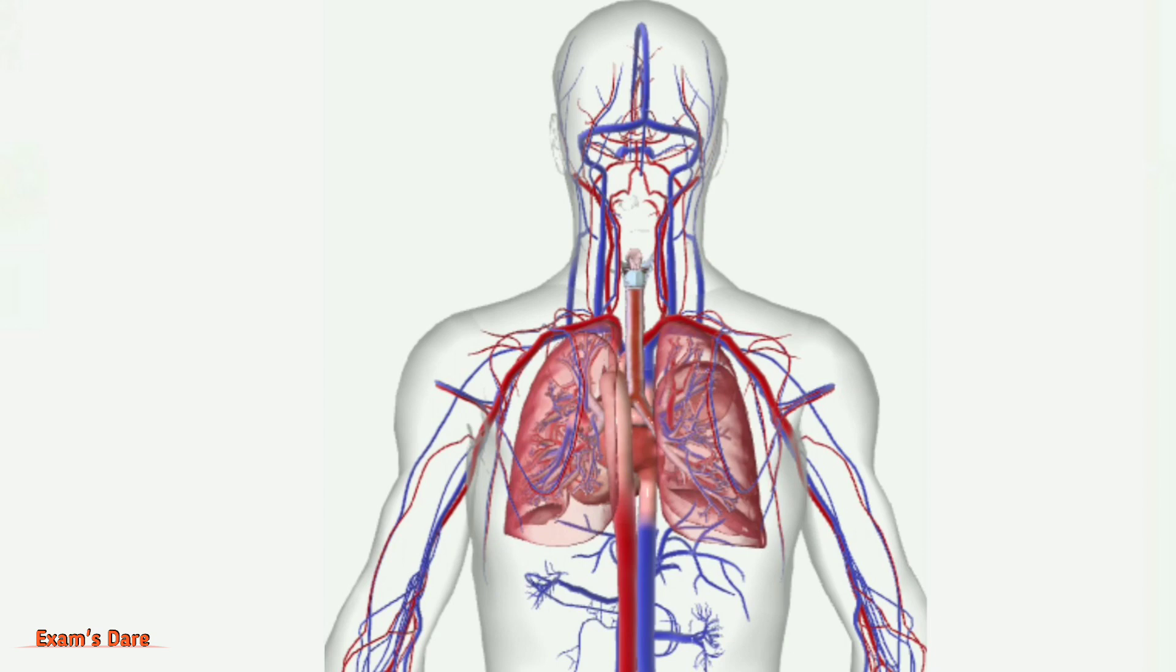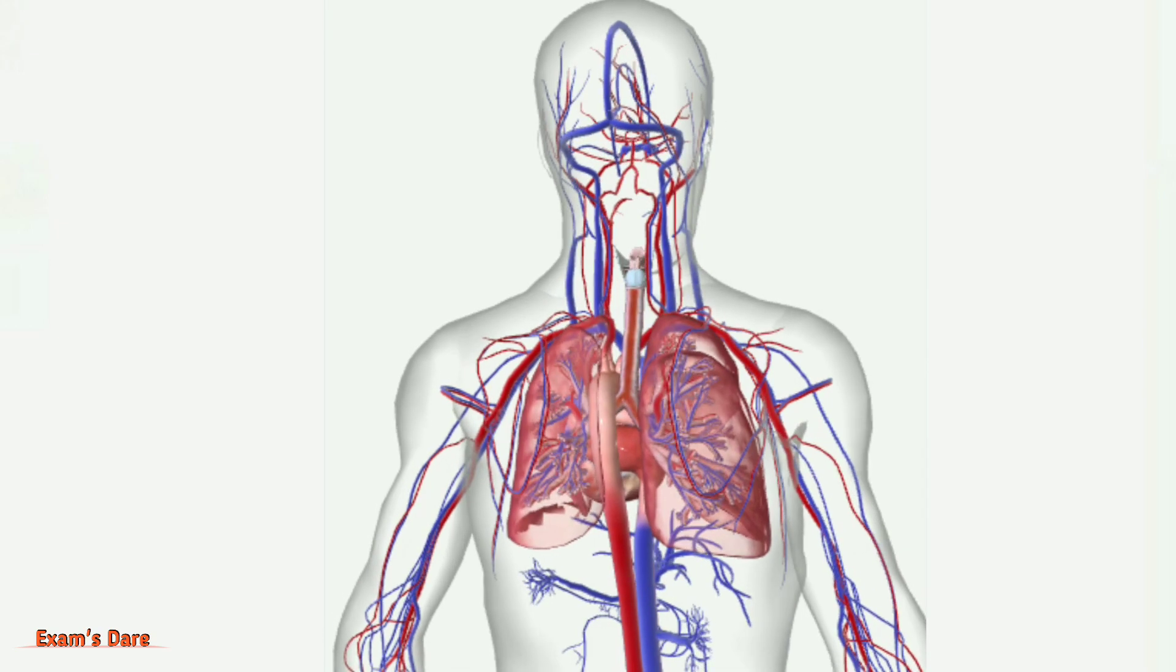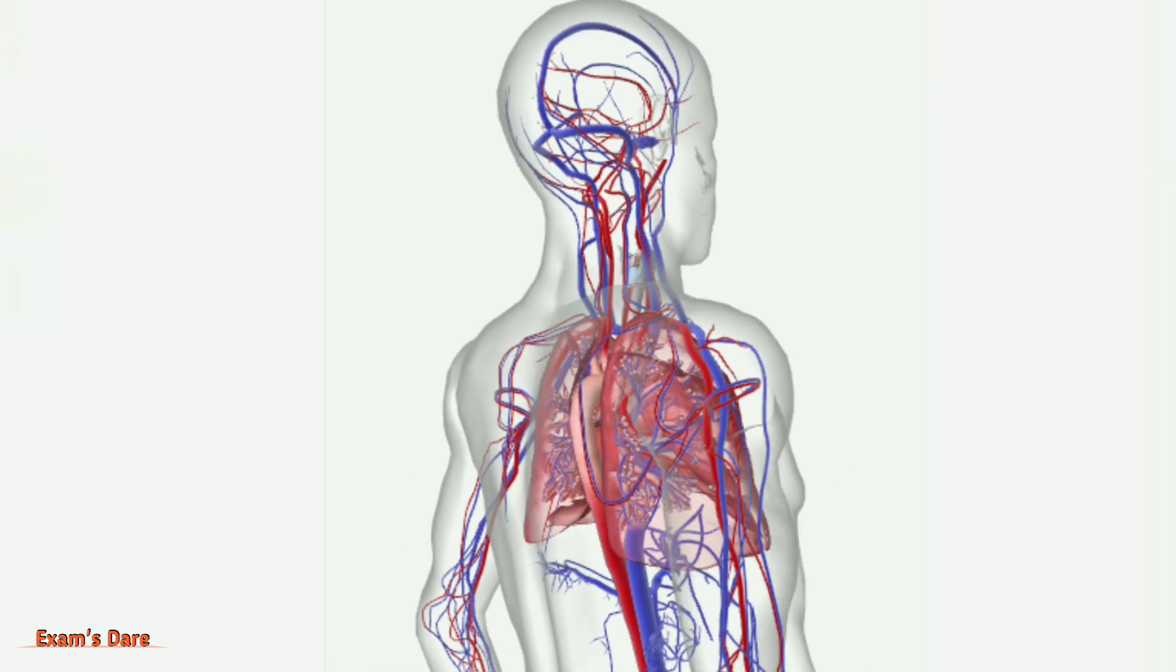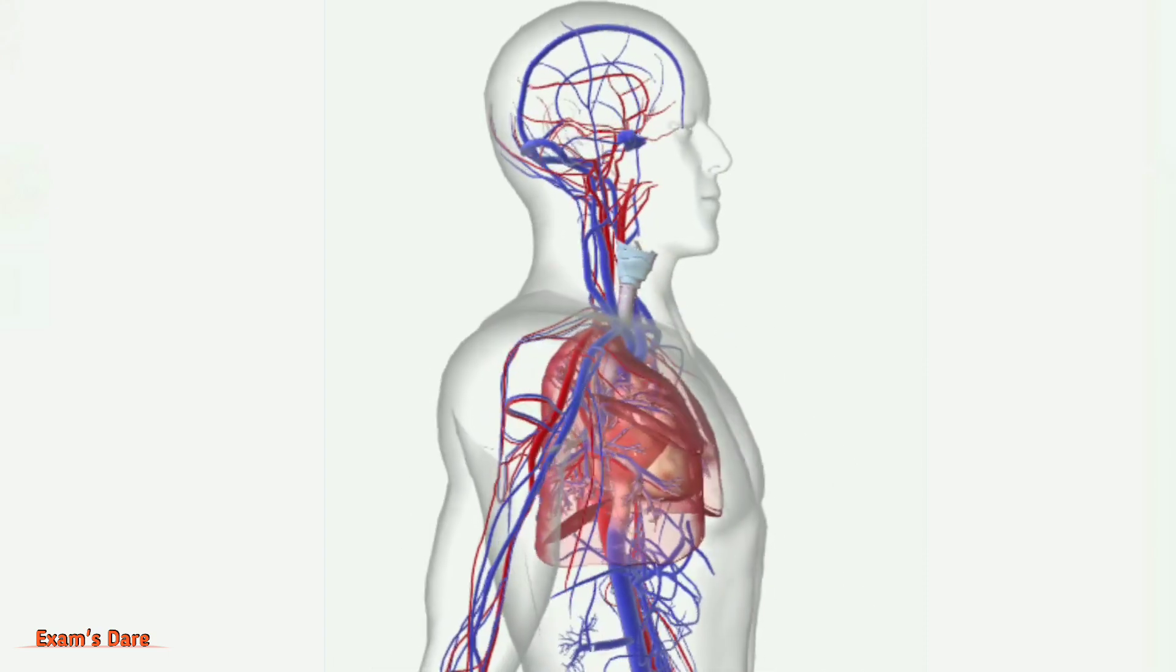The lungs are separated by the mediastinum. This area contains the heart, trachea, esophagus, and many lymph nodes. The right lung is divided into three lobes by two fissures: the oblique fissure and horizontal fissure.